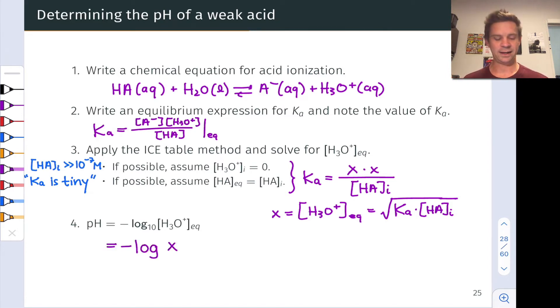To arrive at that, we're just going to take the negative logarithm, base 10 logarithm of the H₃O⁺ concentration, which is identical to X. Negative log X corresponds to the pH. And that's a common last step here.